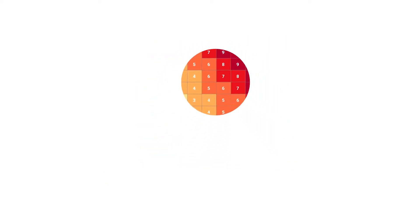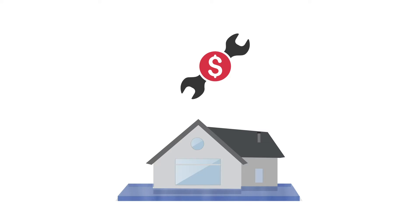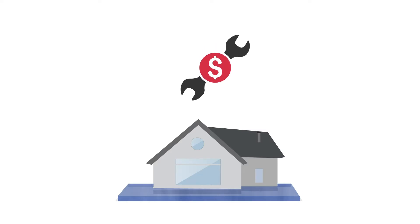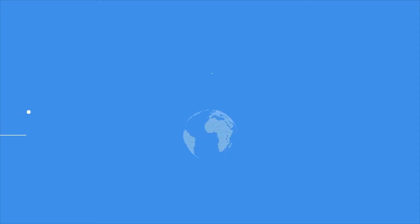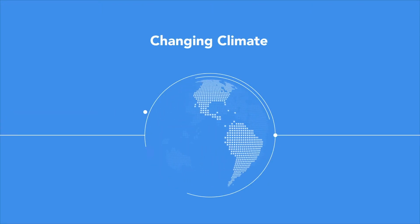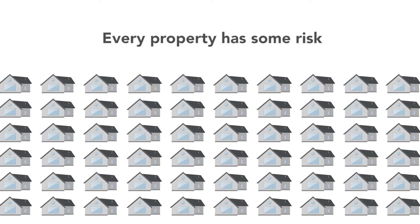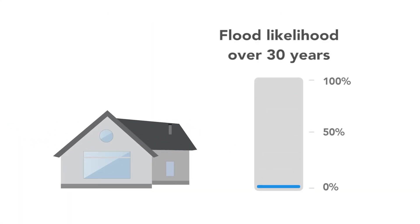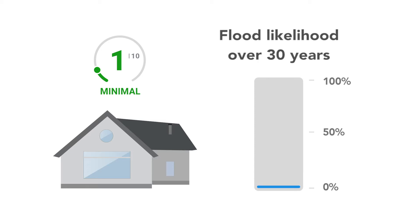Properties with flood factors of 2 or higher also have estimated costs to homeowners of repairing damage to their property as a result of flood risk. The reality of a changing climate means every property has at least some risk of flooding over time, even if that risk is extremely low. For this reason, flood factors do not start at zero — a flood factor of 1 captures even extremely minimal risk over time.